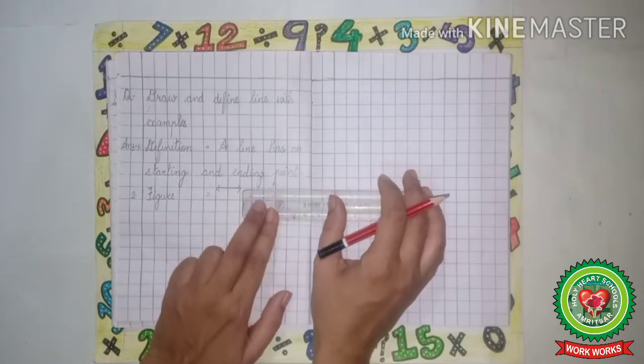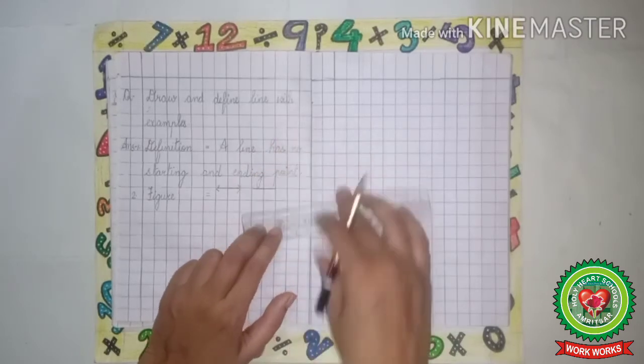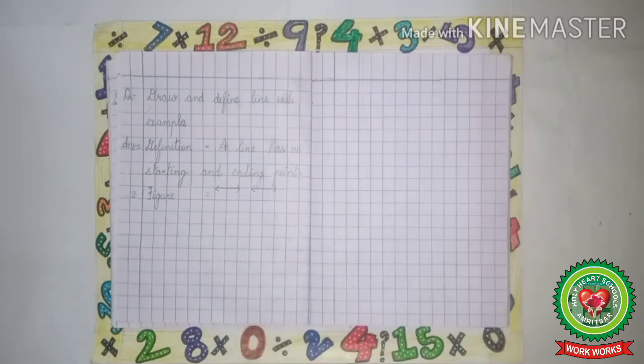After leaving one box we will draw one more line like this, and again we will draw arrows.